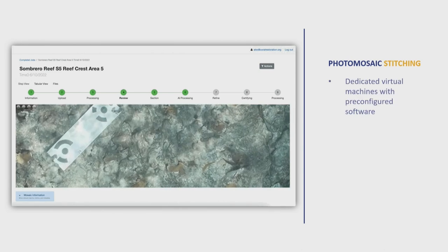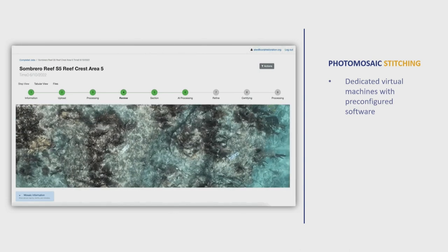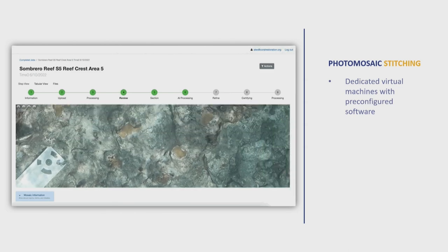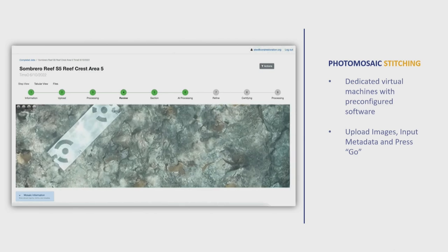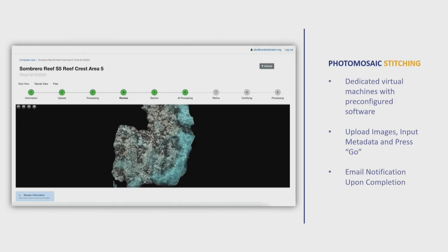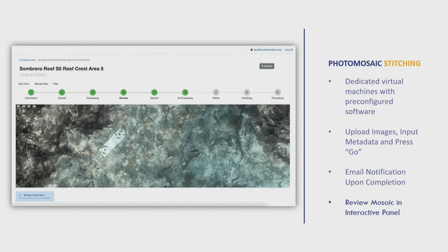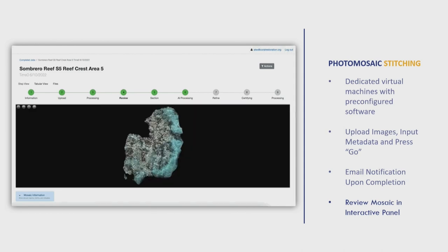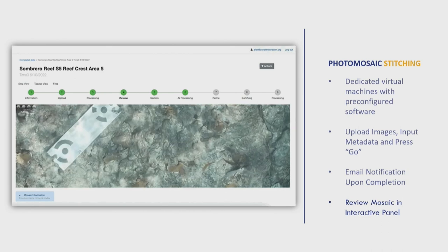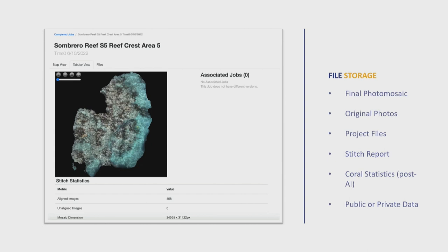Practically, we have dedicated virtual machines in the cloud that run the stitching software with preconfigured scripts, so it's a plug-and-play situation. You upload your images, input some metadata on the site, and press go. You get an email notification when your mosaic is done, and then you can review the mosaic in an interactive panel in your web browser on a laptop — no significant computing power needed. You'll have access to the final photo mosaic image, your original photos, project files, a stitch report, and coral statistics once the AI is completed. You can also mark your project as public or private, so other organizations can sign in, see public areas, and collaborate.